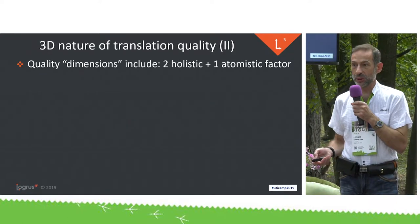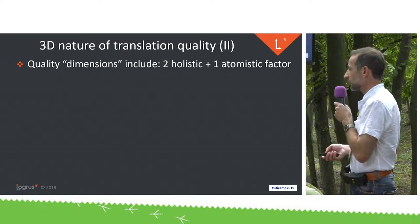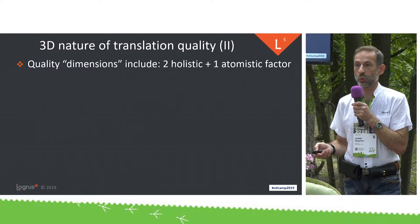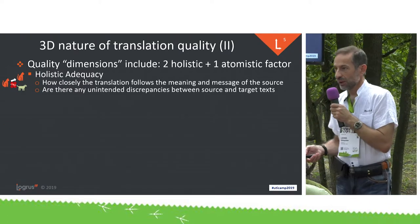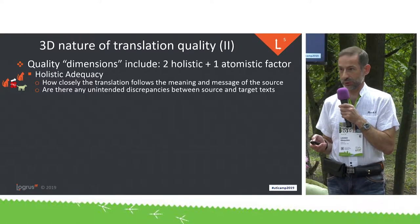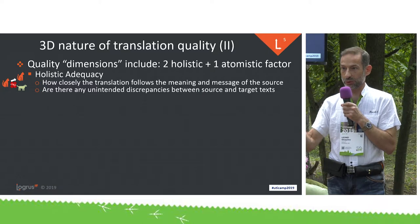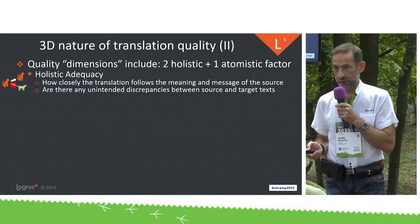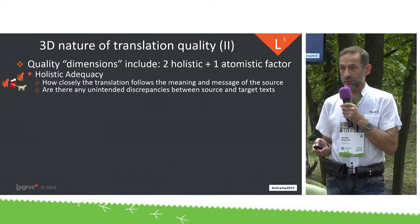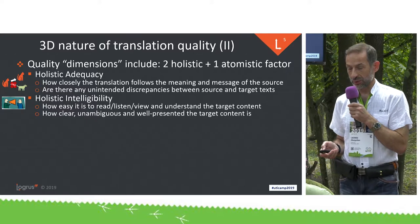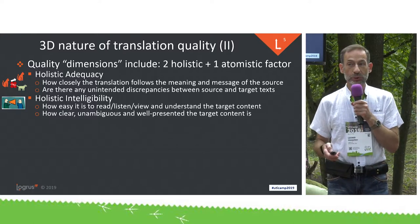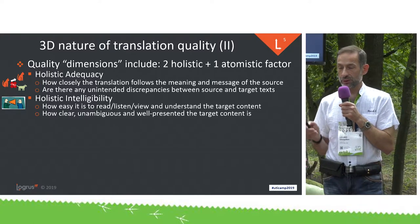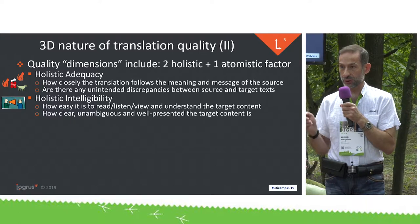So what does 3D quality mean? Generally, quality dimensions include two holistic coordinates and one atomistic coordinate. Of the two holistics, the first is holistic adequacy — how well your translation reflects the overall meaning and message of the source. The other holistic factor is holistic intelligibility, or in the case of text, readability — how easy it is to read the translated text. By the way, they are not dependent on each other.